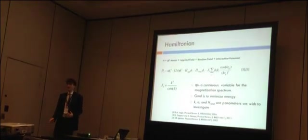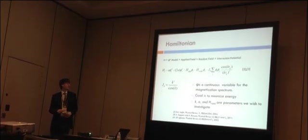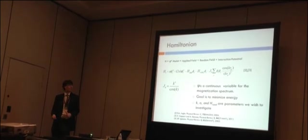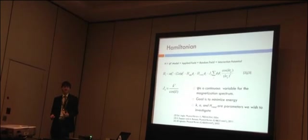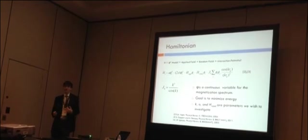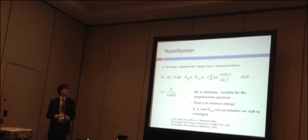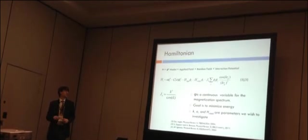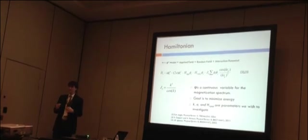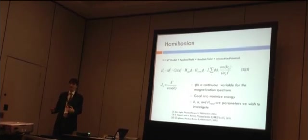So the model we chose to use is a phi-fourth model. A phi-fourth model of the basic form can be seen here where it's a quartic term in a scalar variable phi, phi representing the magnetization, minus a quadratic term. This gives us a double well potential where we can fix minimum of plus and minus one if we make the coefficient on the quartic term equal to two times the coefficient on the quadratic term. This gives us a fixed minimum of plus and minus one which corresponds to spin up or spin down having preferred values.